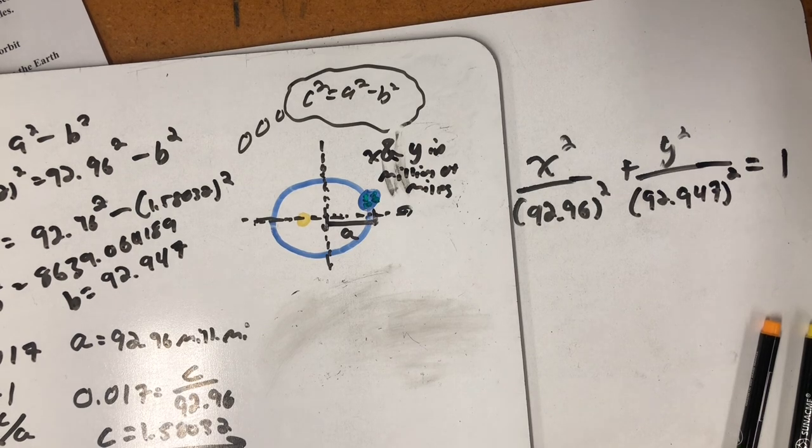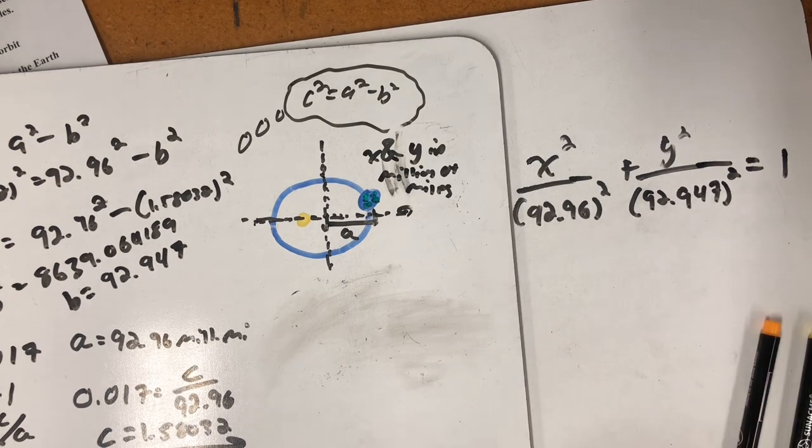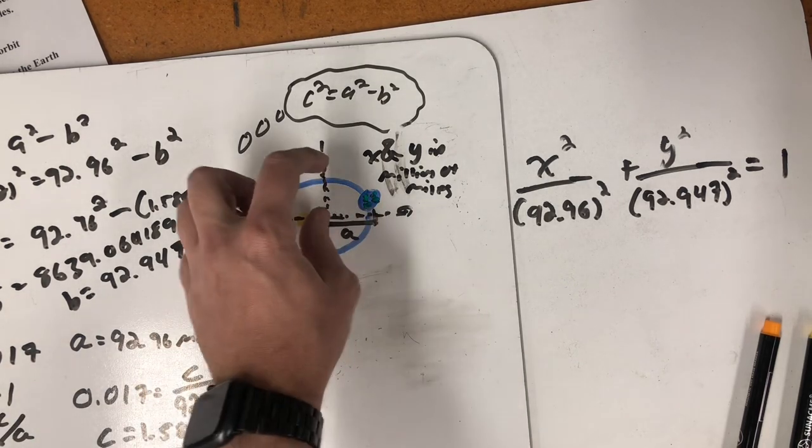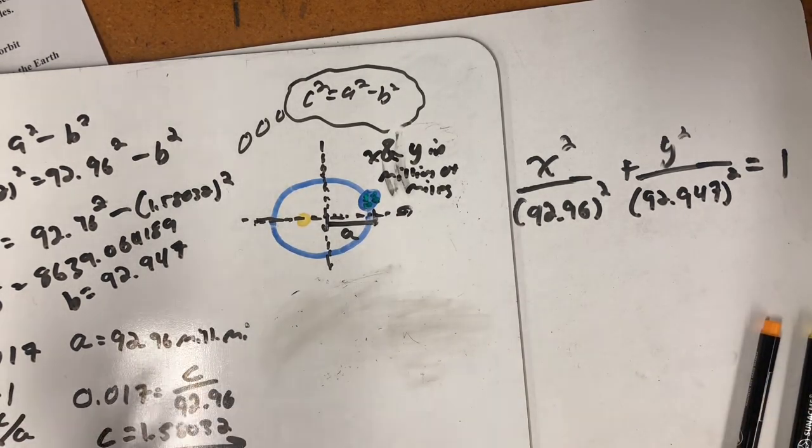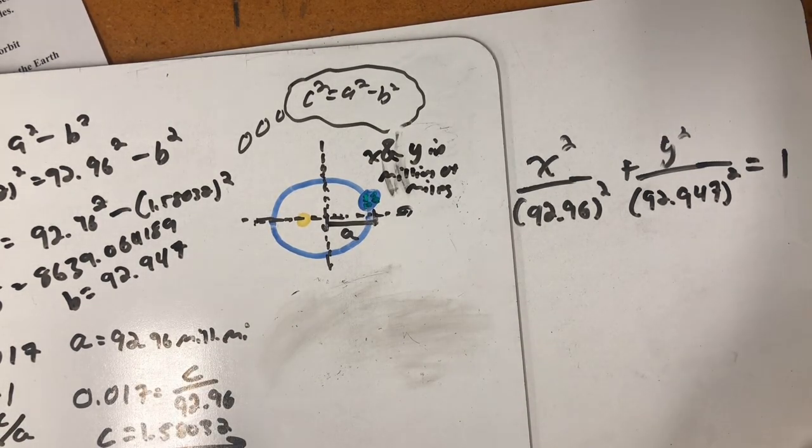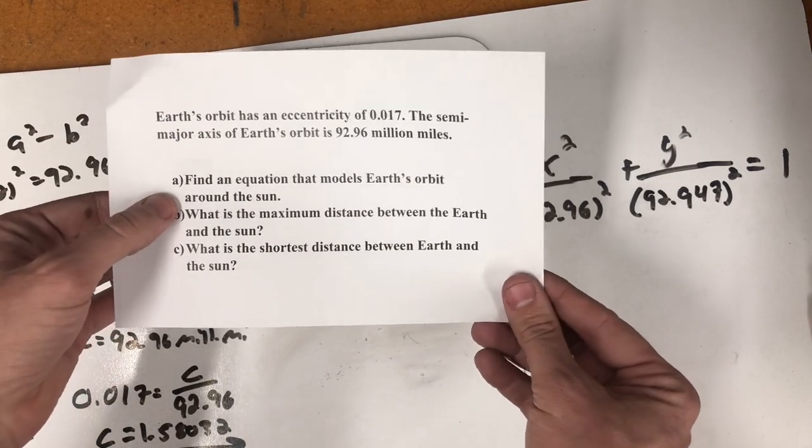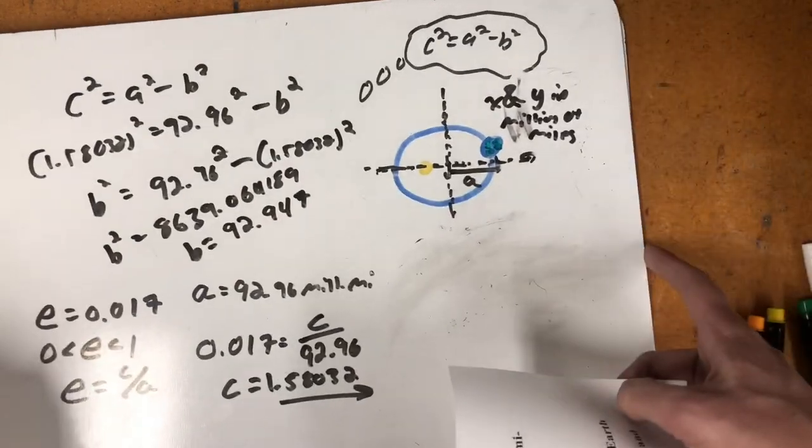x squared over 92.96 squared, that value of A, plus y squared over the value we just wrote down for B. And I'm rounding to one more decimal place there just to indicate that it did go a little more precisely than that. And here I have the equation of Earth's orbit, 92.96 squared on the bottom of the x squared, 92.947. Remember, Earth's orbit's nearly round. And so, there's not a big difference between A and B. Relatively, there's not a big difference. These are in millions of miles. There's our equation for Earth's orbit. And now we're asked to try to figure out the furthest distance Earth is from the sun and the smallest distance Earth is from the sun.